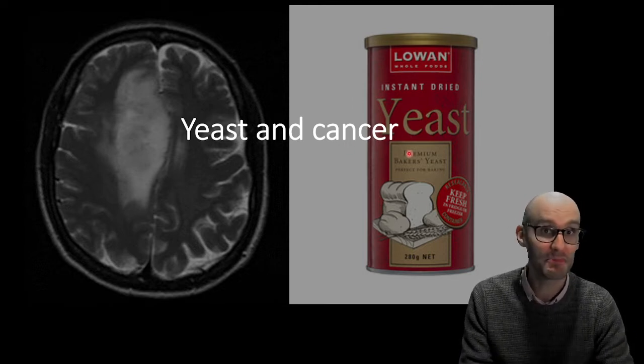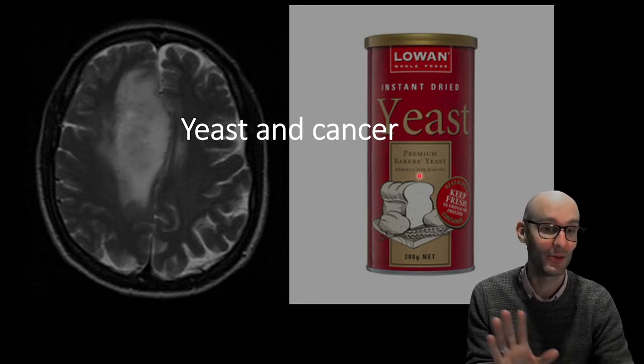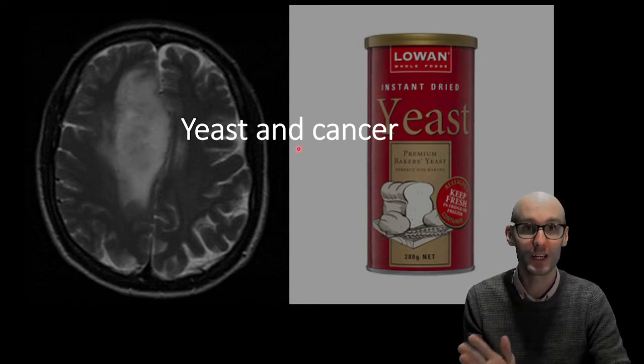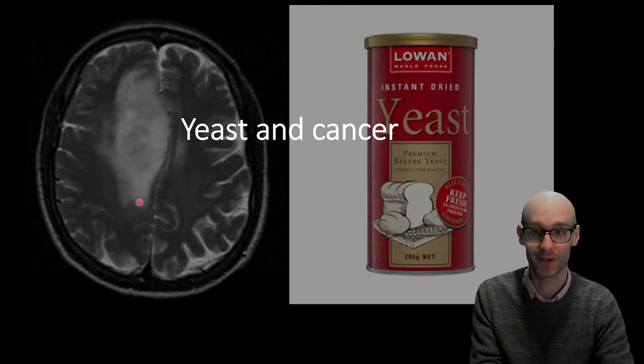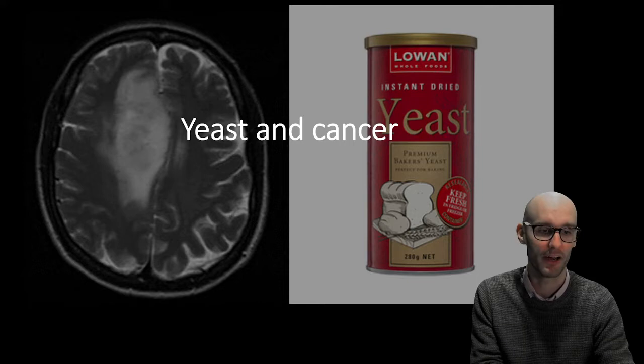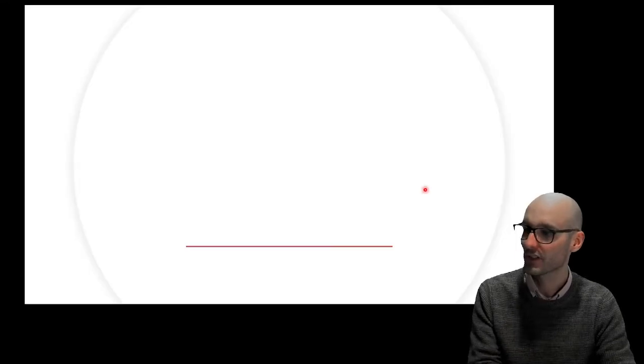And the discoveries made in these yeast cells that you can get from the supermarket were critical in our understanding of complicated diseases like glioma, which is a cancer of the brain, which we can see growing here in this MRI here. Right, so let's jump into it.